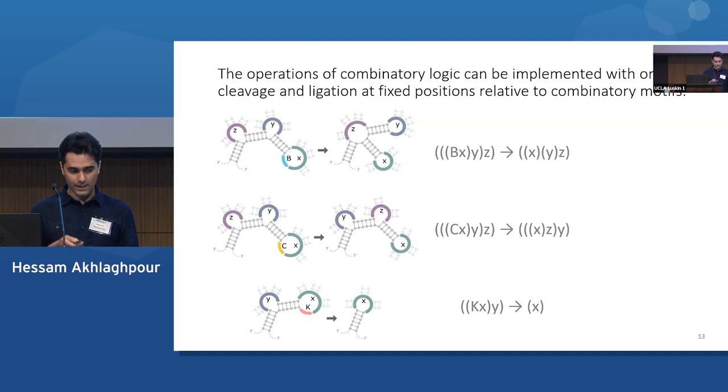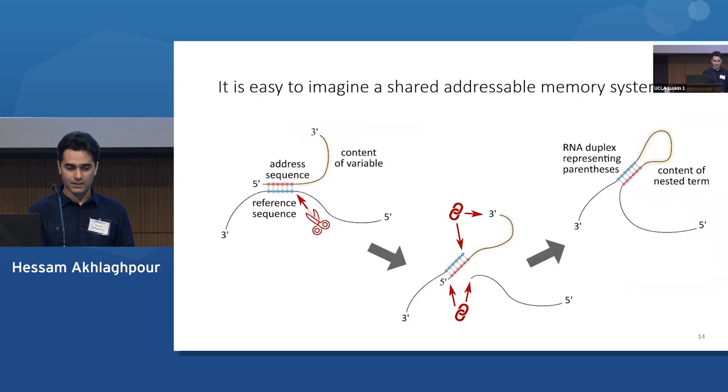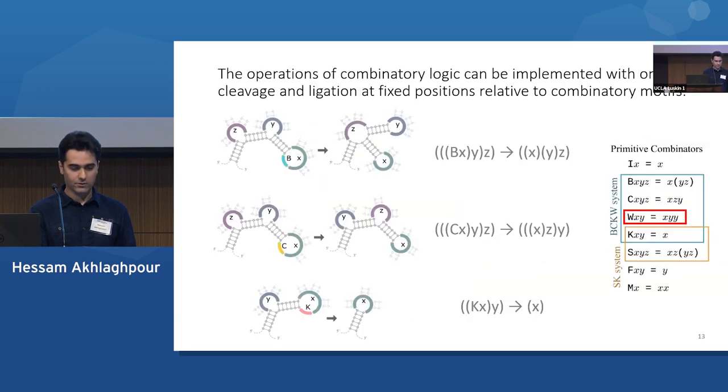Now, so far I've shown you B, C, and K. But there's one more that I need in order to fulfill universal computation. I need this W combinator.